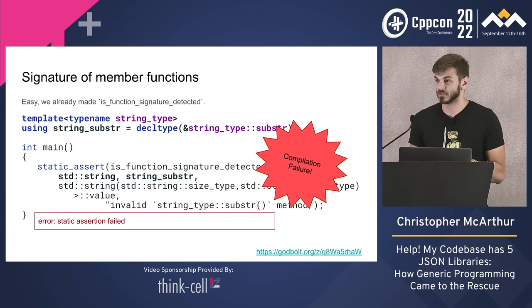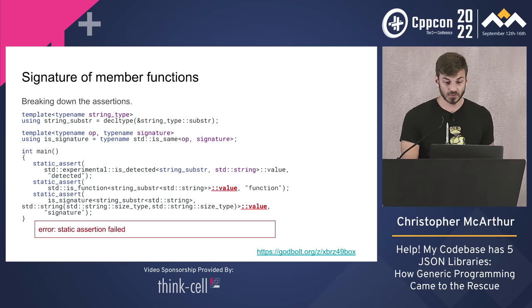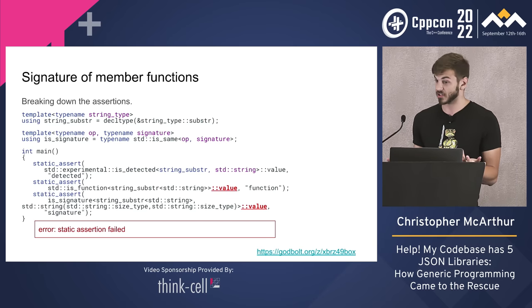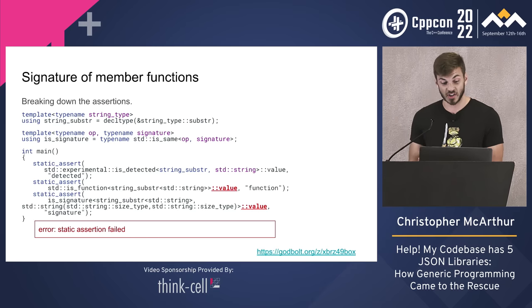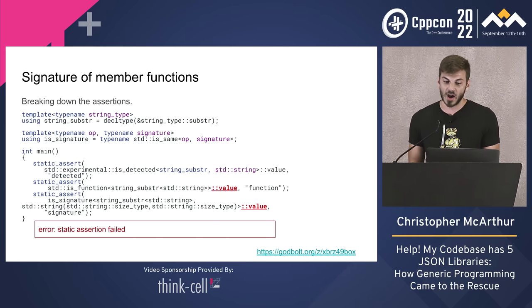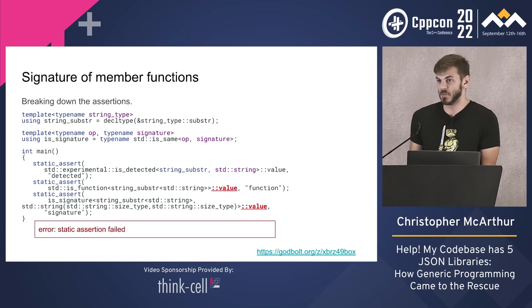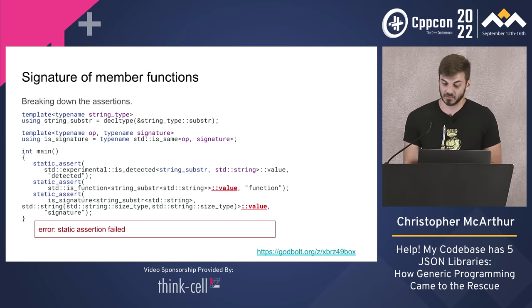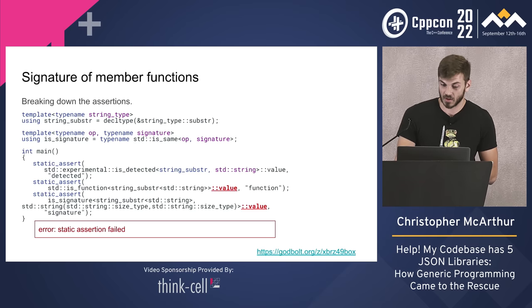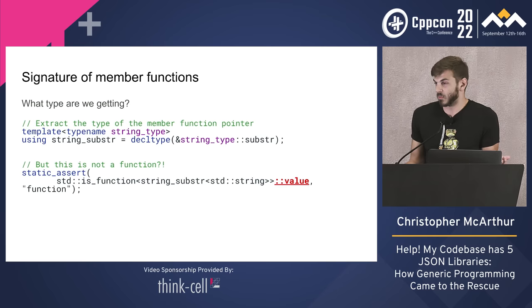This fails. Why the hell does it fail? Like a developer, you break down all your static assertions to find which of the three is actually failing — and it turns out is_function is failing and is_signature is failing. So why is std::string::substr not a function? You would expect that to be a function — you're calling the method, why wouldn't it be?